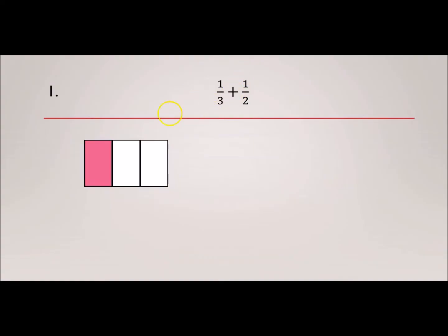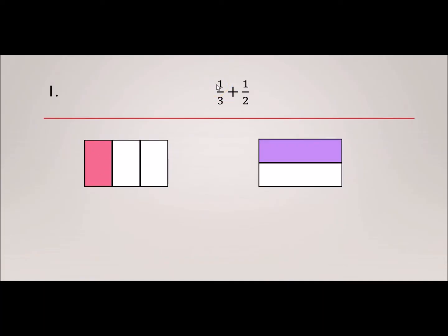The representation looks something like this. We have 3 parts — 1, 2, 3 — and of the 3, only 1 is shaded. Same thing with the half: the whole is 2, so 2 makes a whole, but of the 2, only 1 is shaded, which is this right here.